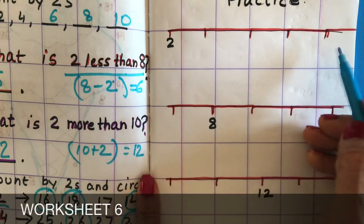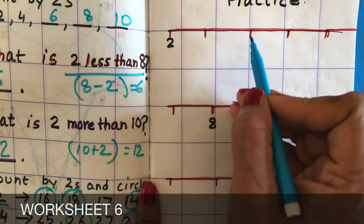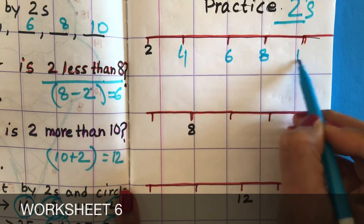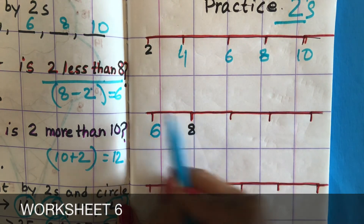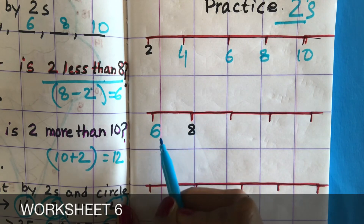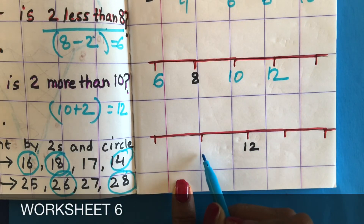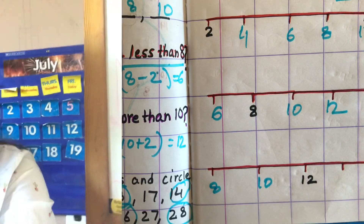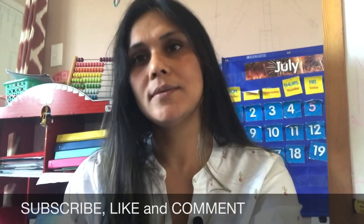The last worksheet is a line bar where you write one number at any place and they fill up the rest by skip counting by twos: 2, 4, 6, 8, 10. Here is 8 — what comes before 8? Six, which is 2 less than 8. Now 10, 12. Here is 12 — what comes before 12? 2 less than 10. These are the worksheets you can try with your kids. Hope you like this video — if you do, don't forget to subscribe and leave a comment!